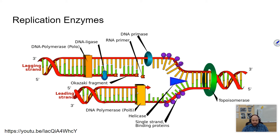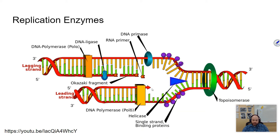Once helicase unzips the strands, the first thing that has to happen is an RNA primer has to be put down. There's only going to be one RNA primer on the leading strand, and several are going to be put down on the lagging strand. The RNA primer is added by a molecule called primase, and it basically marks where replication is going to start. Then the next molecule, called DNA polymerase, comes along. DNA polymerase is the molecule that is actually adding the new bases — if a base on the template is a T, it finds an A and adds it; if it's a C, it adds a G, and so forth.